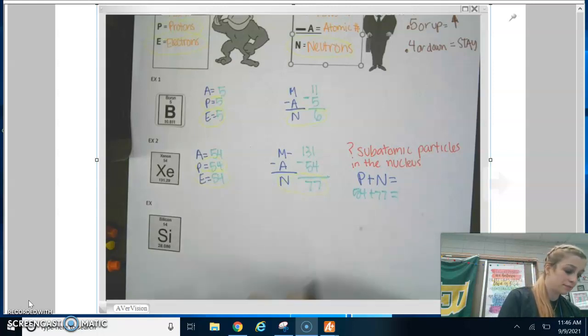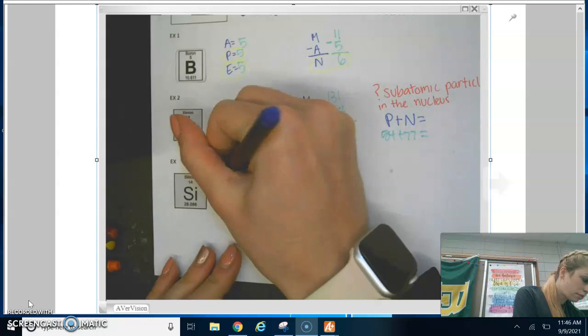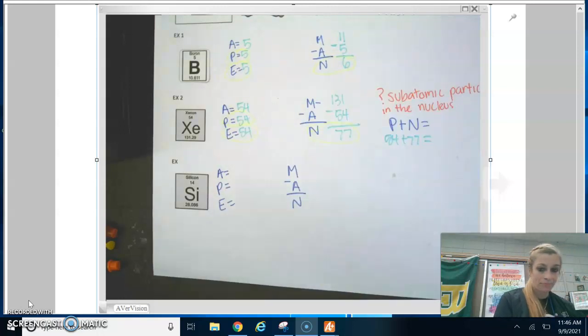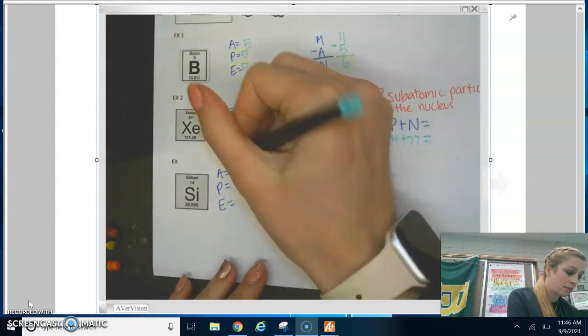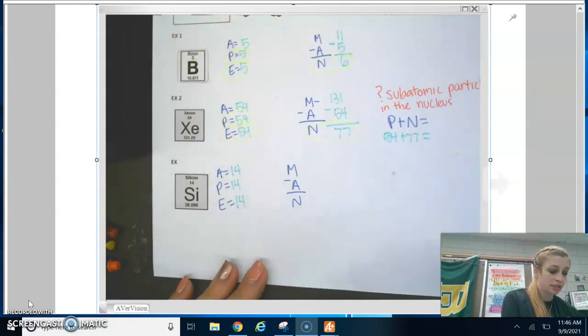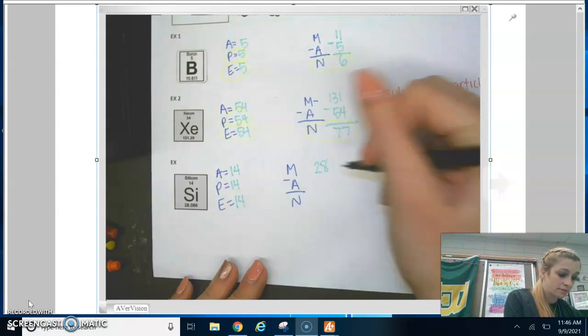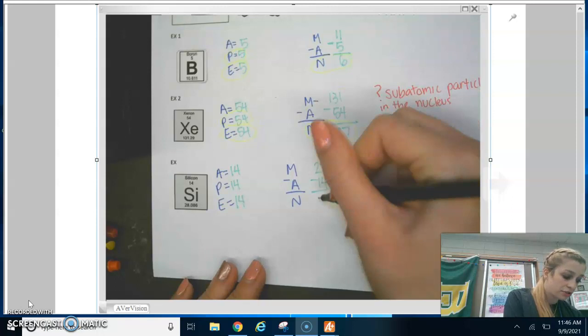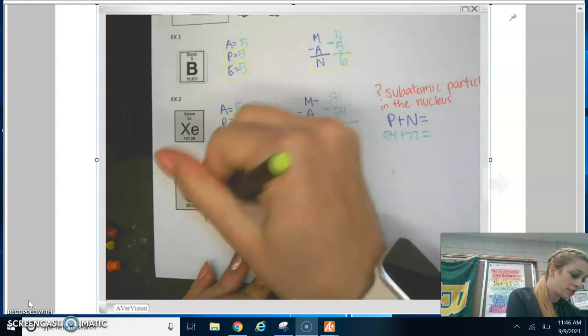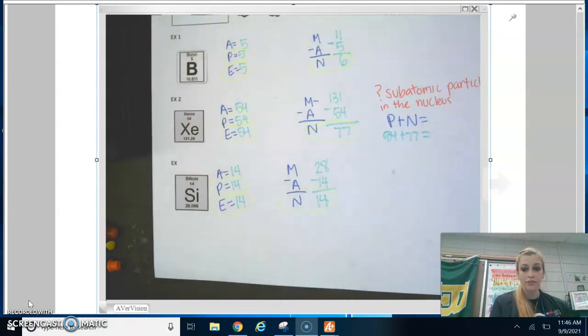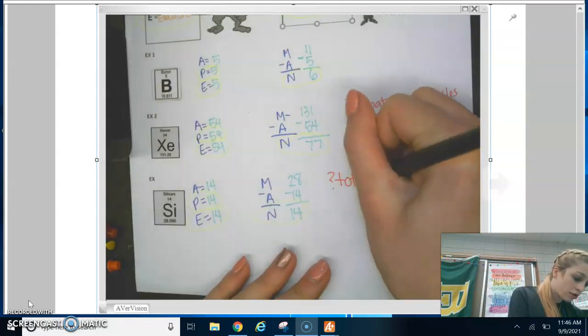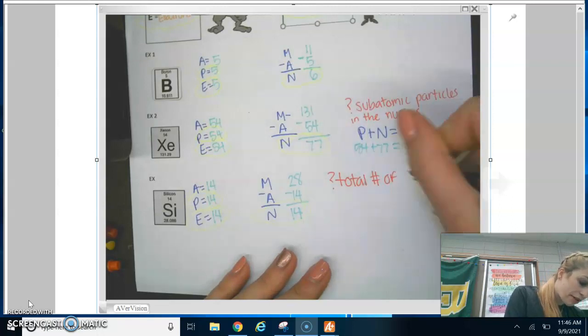What if you have a question that says, what is the total number of subatomic particles? Well, then we would have to add all the parts of an atom, which are protons, neutrons, electrons. So we would have to do 14 plus 14 plus 14. That would give us the total.